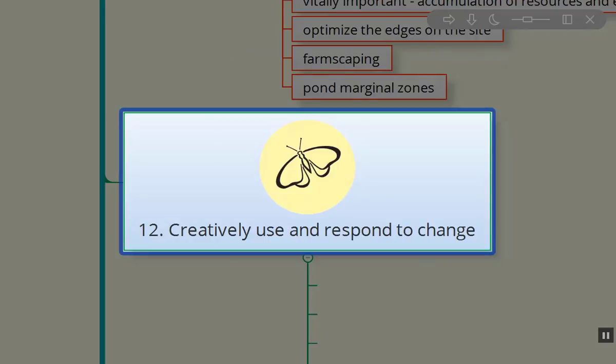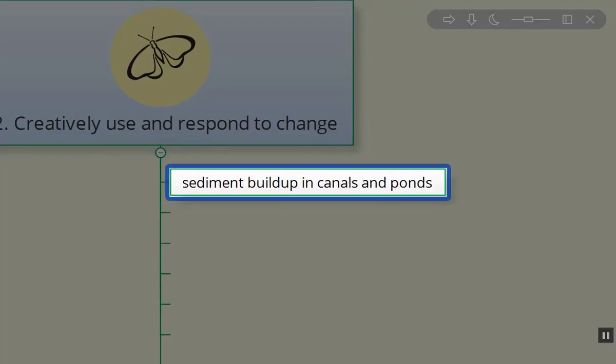So creatively use and respond to change, the 12th permaculture principle. This one we need to keep coming back. Here's a couple of examples. I experienced tremendous sediment buildup in the canals and ponds that I put in. So I ended up, my way of responding to this significant change is I put in an additional canal system that I can capture all that sediment and harvest it more easily.